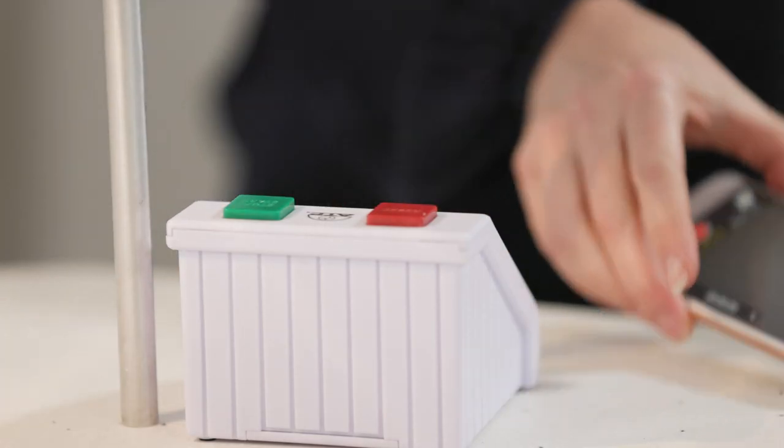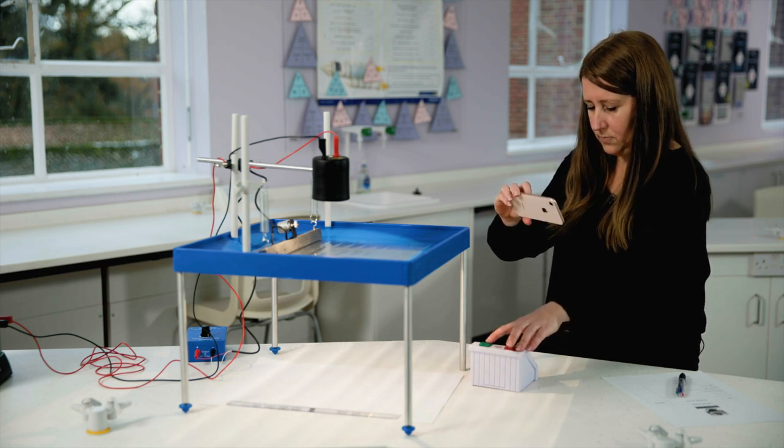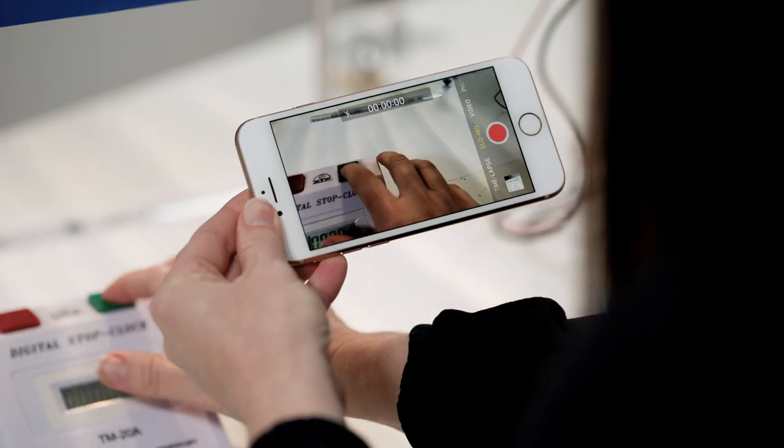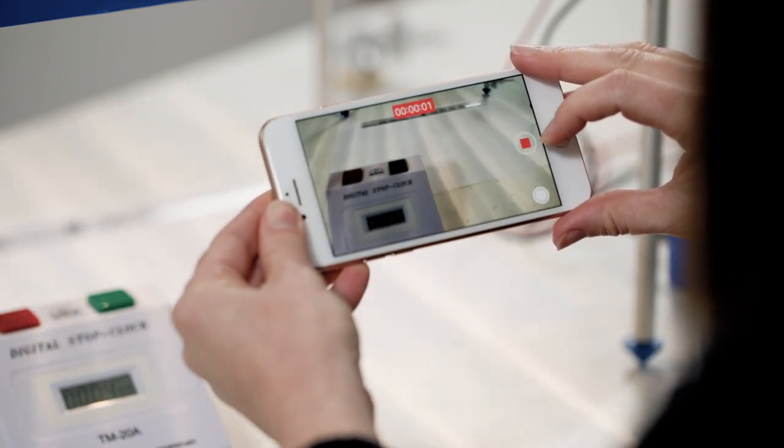Using your smartphone and stopwatch, film and then count how many waves are formed in 10 seconds. Using your camera's slow motion function, record this number into a suitable results table.